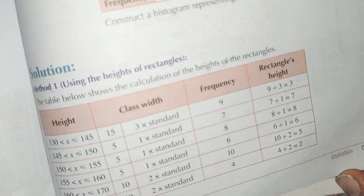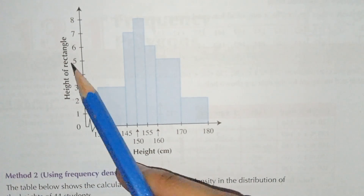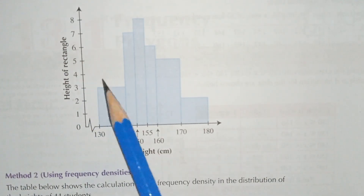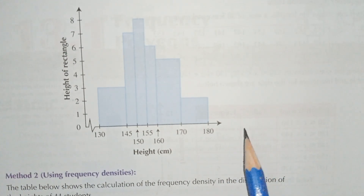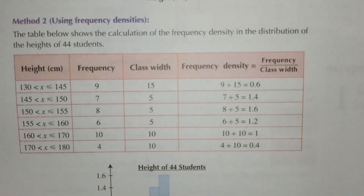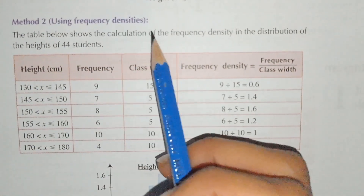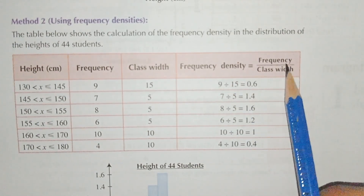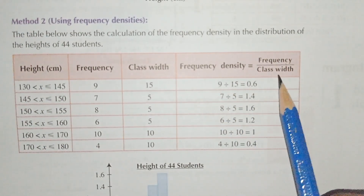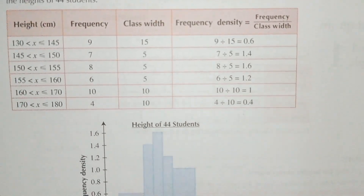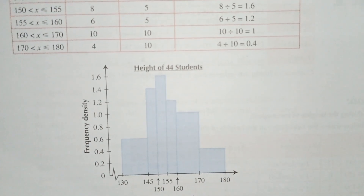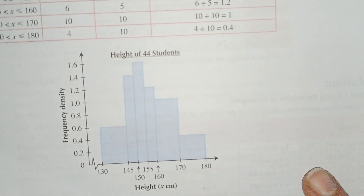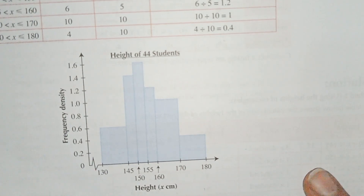In the histogram we use this rectangle height. You can observe the histogram is drawn using the heights of the rectangles. Method two uses frequency densities — we divide the frequency by the class width to get the frequency density, and the histogram is drawn using the frequency densities as heights. These are both shown in worked example one.